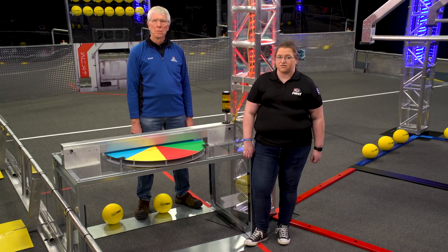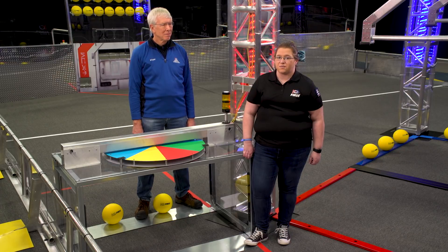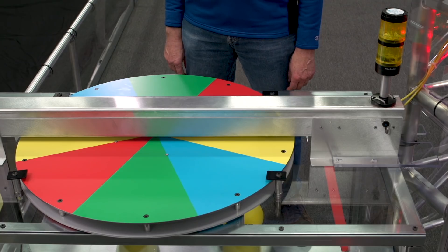Position control for Stage 3 requires teams to rotate the control panel to a specific color. Once Stage 3 has reached capacity, the stack light will turn on.